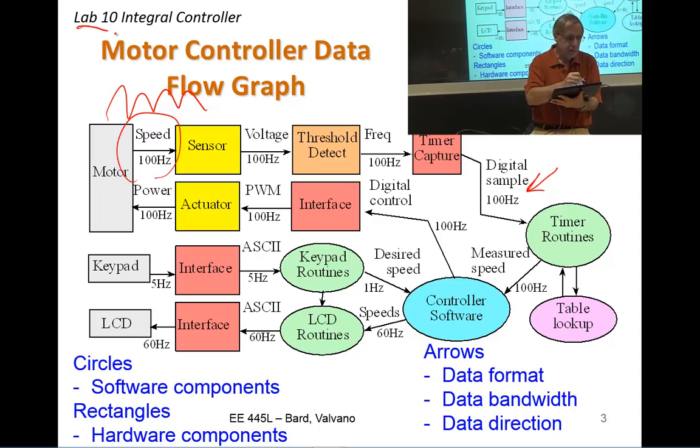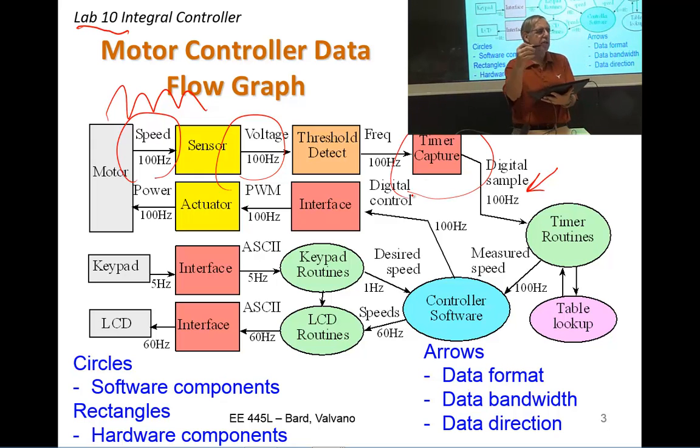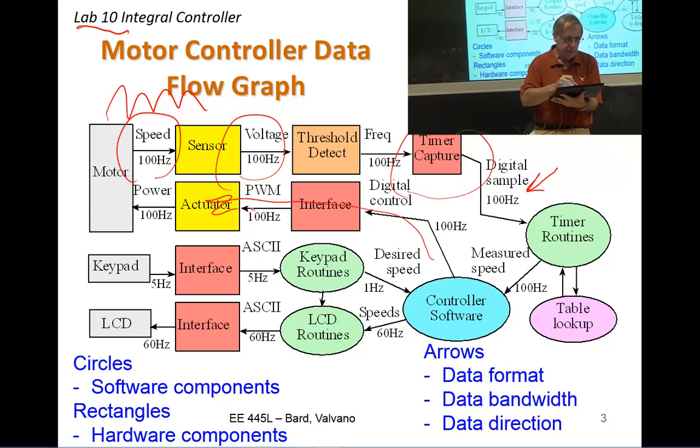The squares or the rectangles represent physical devices. This is lab 10, which is our PI motor controller. The purpose of this system is to spin the motor at a constant speed. We'll use the timer chip to actually determine the speed by measuring the period of that square wave. And then we will affect the power to the system using a system called pulse width modulation. Any questions on data flow graphs?